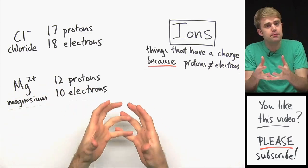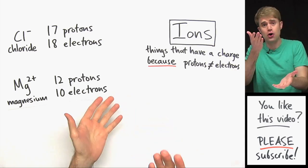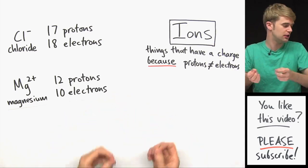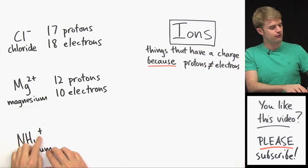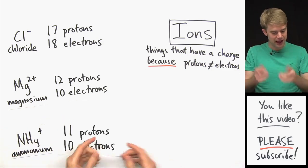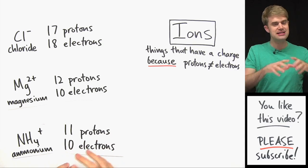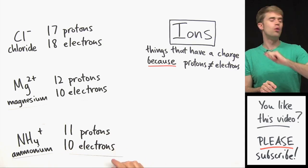We can also have groups of atoms that together don't have the same number of protons and electrons. We call those polyatomic ions. So those are things like Ammonium, NH4 1+, which has 11 protons altogether and 10 electrons altogether with a one plus charge.